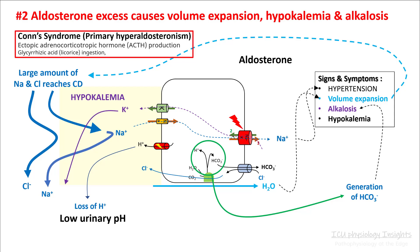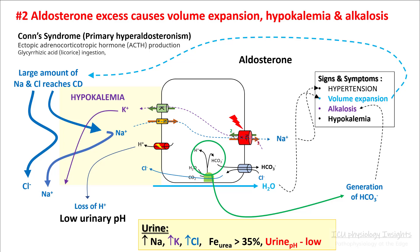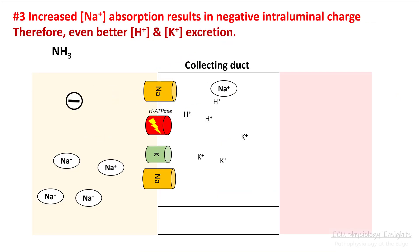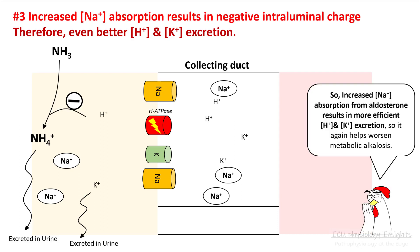In primary hyperaldosteronism there is excess aldosterone resulting in volume expansion as the primary reason. This results in a large amount of sodium and chloride reaching the collecting duct. Some of the sodium is absorbed through the aldosterone pathway while a lot of sodium is still excreted. So your urine is rich in sodium, potassium, and chloride. Your FE urea is more than 35% and your urine pH is low. Sodium absorption results in a negative intraluminal charge, therefore results in better excretion of hydrogen and potassium ion, which again helps worsen metabolic alkalosis.